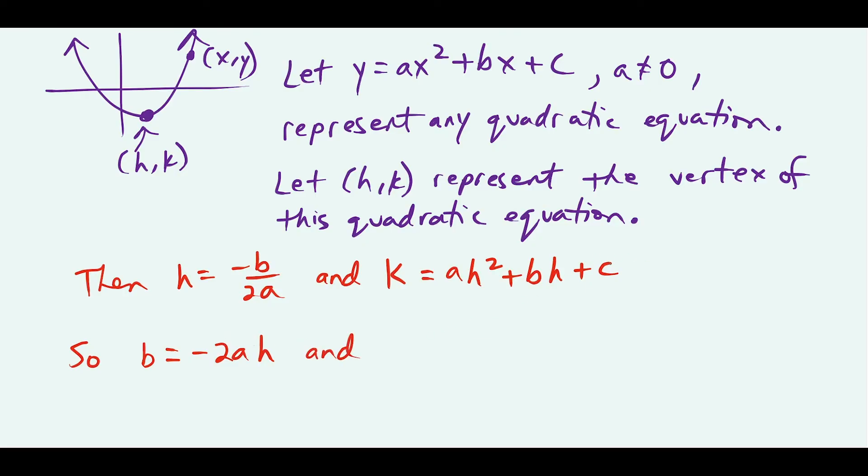And if I wanted to solve this second equation for c, I could say that c equals k minus ah squared minus bh. All I have to do is subtract these two terms to the other side, and that solves for c.